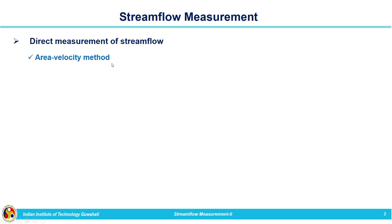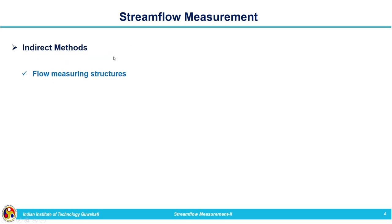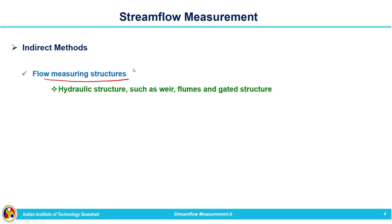Direct measurement of streamflow includes different techniques: area velocity method, moving board method, dilution technique, and ultrasonic method. For indirect measurement, those include flow measuring structures. In rivers at different locations we have different hydraulic structures such as weirs, flumes, and gated structures which can be considered as control sections. We can measure the discharge by making use of measurements at these control sections.